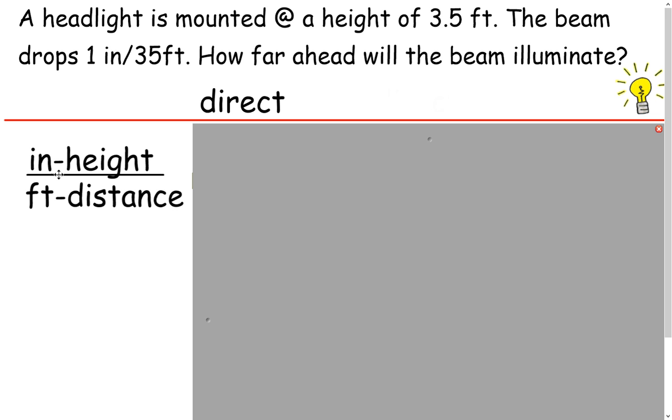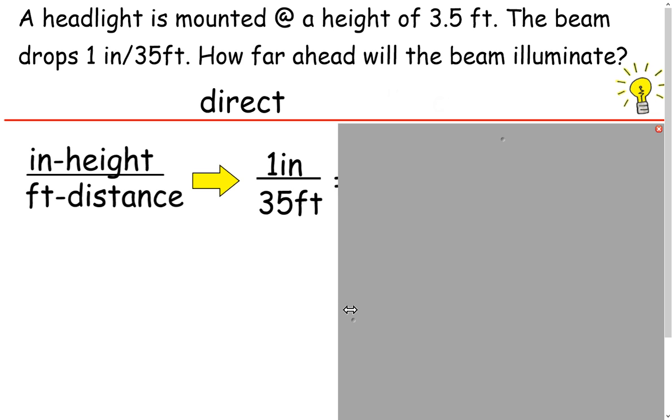In words, we're going to have inches probably on the top because we already have one right here. We already have the proportion or one ratio set up. That's going to guide our proportions. Inches on the top and feet on the bottom. So inches in height on the top, feet on the bottom for distance. So there's the first one. That's the one that they gave us. That's the drop that's happening.